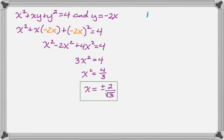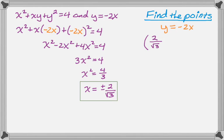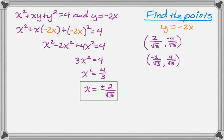But I really want the points. So to find the points, I'm going to go back and I know that y equals negative 2x. So when x is 2 over radical 3, I multiply that by negative 2 to get the y coordinate, negative 4 over radical 3. And when it's negative 2 over radical 3, the y coordinate will be 4 over radical 3. Those are the points on the curve where the tangent line is horizontal or where the slope of the curve is 0.